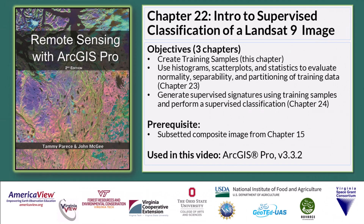An analyst has more control over the supervised classification process than the software-controlled unsupervised classification process demonstrated in Chapter 21. Through supervised classification, the analyst selects pixels representing recognized landscape features that can be identified from other sources, such as high-resolution aerial photos, knowledge of the data, the classes desired, and the algorithm to be used is required before selecting training samples — samples of spectral values within the image that pertain to specific features or patterns. The analyst essentially trains the software to identify pixels with similar characteristics by identifying patterns in the imagery and choosing the spectral classes for the informational classes, thus supervising the classification process.